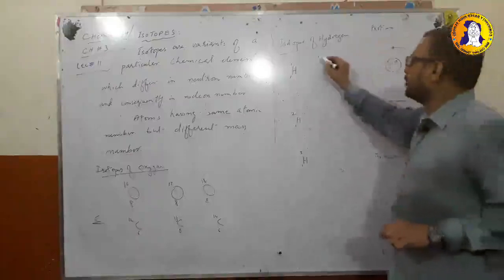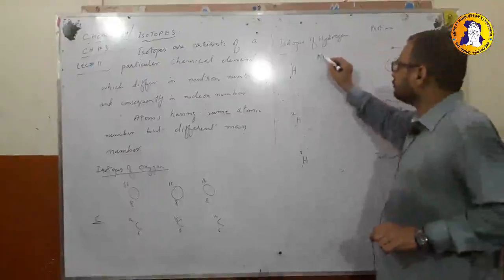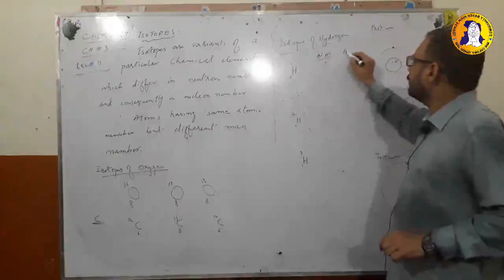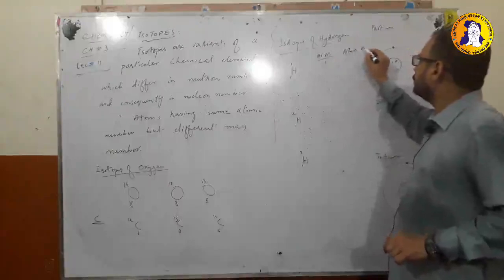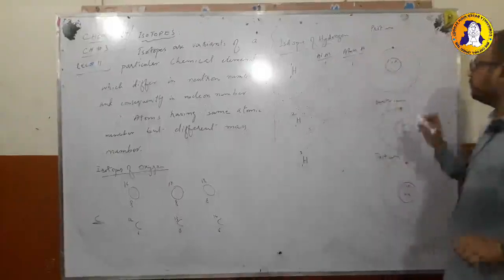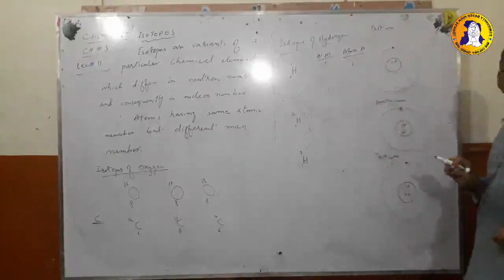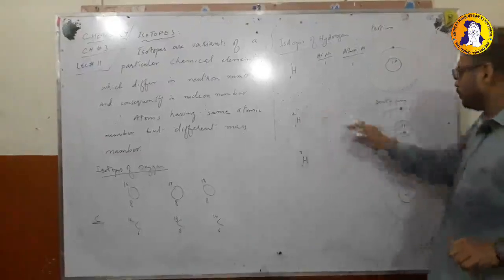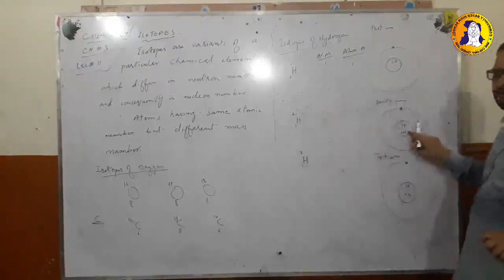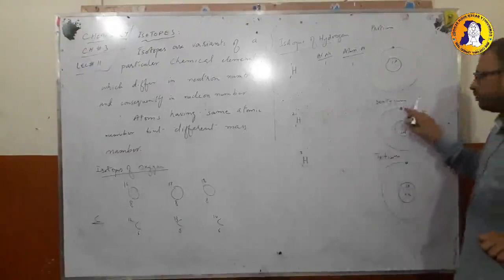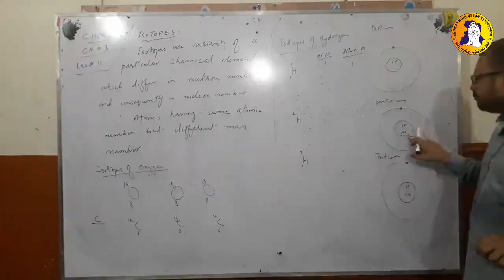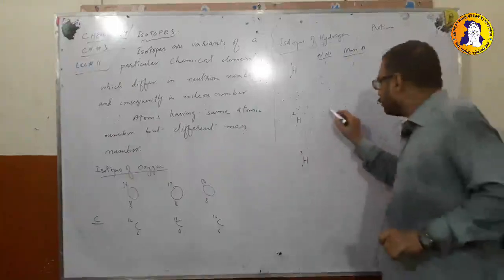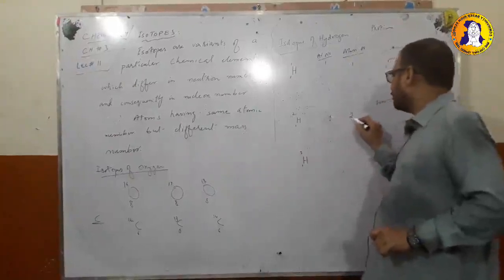Ordinary hydrogen has atomic number one and mass number one because there is no neutron in it. Another form of hydrogen has one proton and one neutron — it has one electron and one proton but one neutron which was not in ordinary hydrogen. So it has atomic number one but mass number two, due to the difference in the number of neutrons.